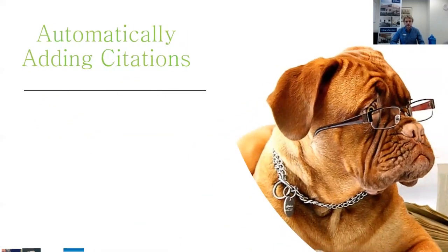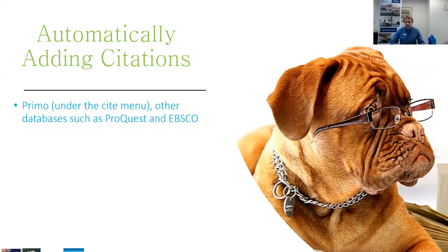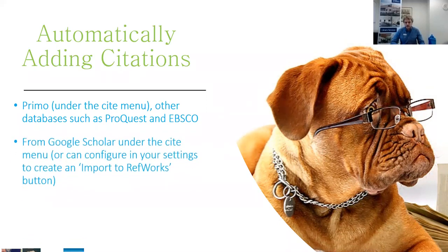Automatically adding citations is the way most people would do it. In Primo — which we call Library Search — under the Cite menu there's an option to push to RefWorks. Other databases such as ProQuest and EBSCO have a save to RefWorks button as well. In Google Scholar there's a little Cite button that also has a push to RefWorks option, or you can configure your settings to have it pop up. I'll show you that in a little bit.